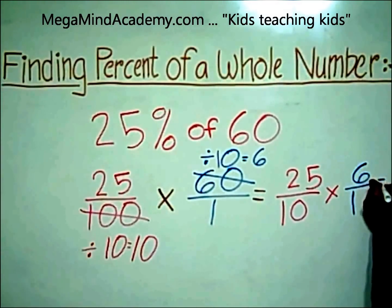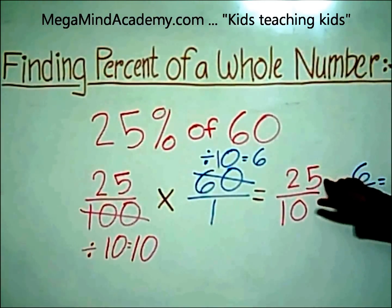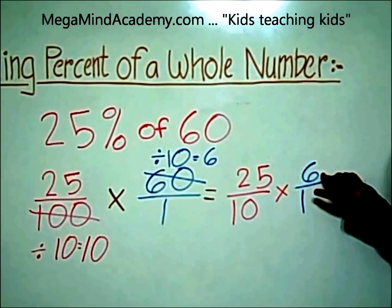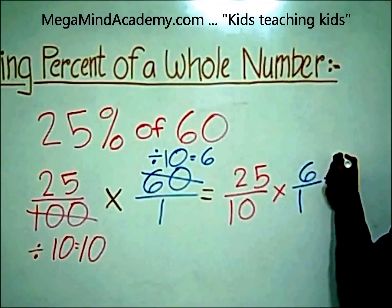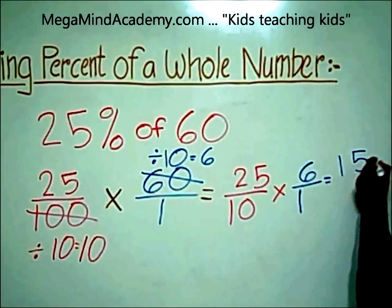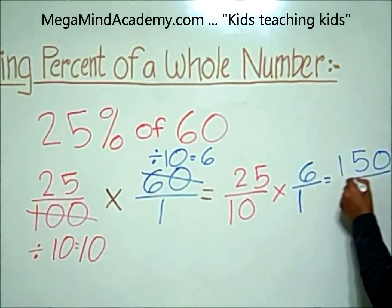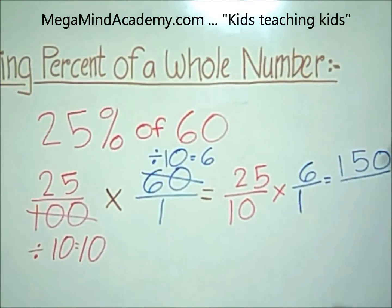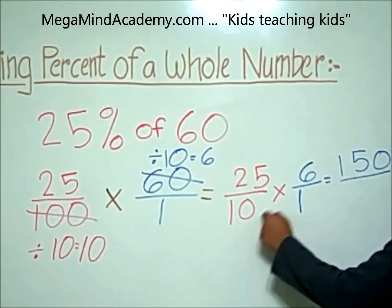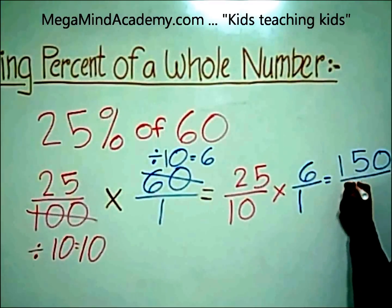So let's multiply. 25 times 6 is equal to 150, and 10 times 1 is equal to 10. So our final fraction is 150 over 10.